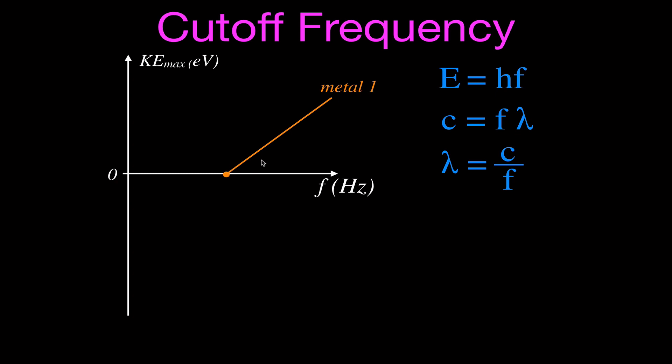Every metal has its own cutoff frequency, so we can do the same thing for a second metal. This one has a lower cutoff frequency — we reach the cutoff frequency, have enough energy to overcome the work function, and get another graph line showing the kinetic energy electrons have as frequency increases. You'll notice those lines are parallel — that's a fascinating part of this.